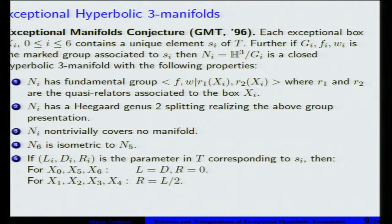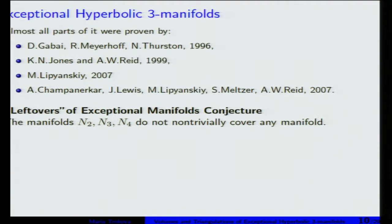At that point they had the Heegaard splitting. They also conjectured that every exceptional manifold covers no other manifold, and two of those boxes give isometric manifolds. Almost all parts of this conjecture were proven. Gabai, Meyerhoff, and Thurston in their paper proved that even if manifolds are exceptional, the homotopy rigidity theorem is still true for those manifolds, and they proved some parts of this conjecture.